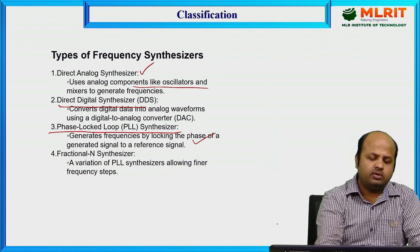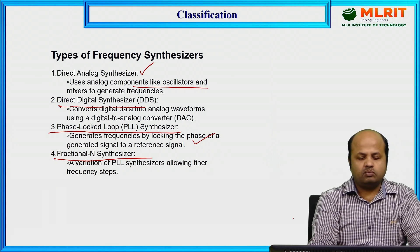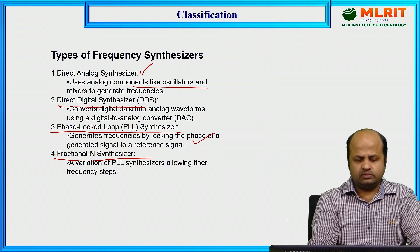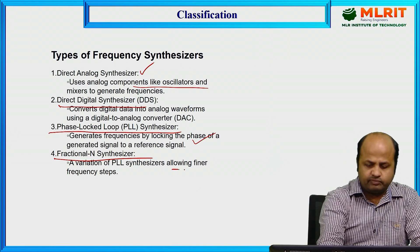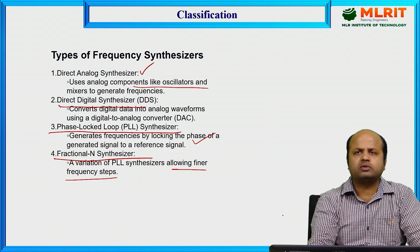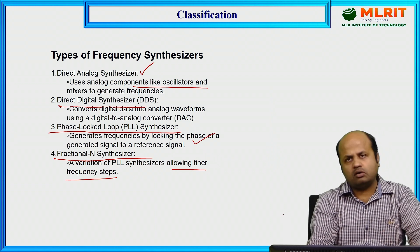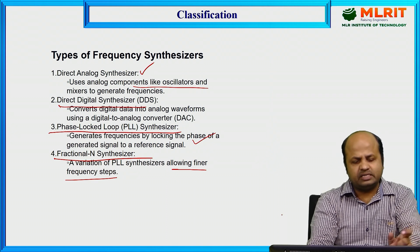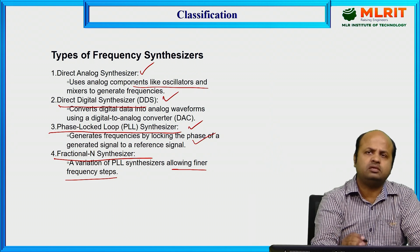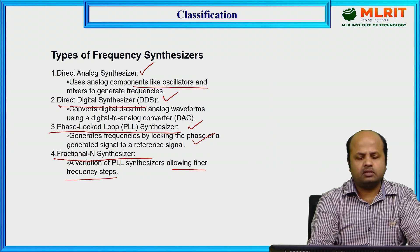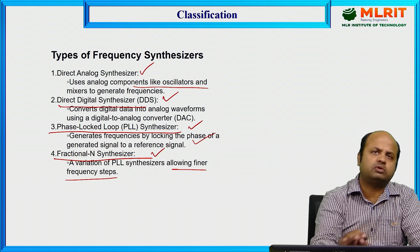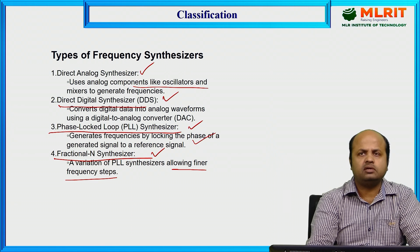The fourth type is the fractional-N synthesizer. It is also a type of variable PLL synthesizer, allowing finer frequency steps. So, basically we have four types of frequency synthesizer available: direct analog synthesizer, direct digital synthesizer, phase locked loop (PLL) synthesizer, and fractional-N synthesizer.